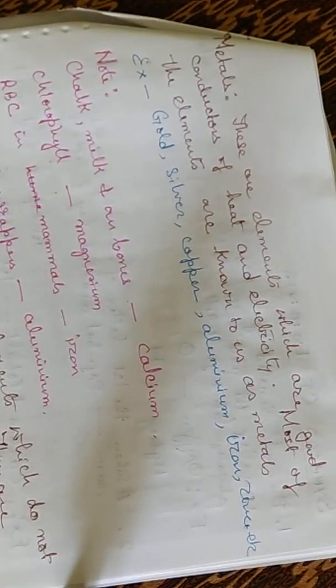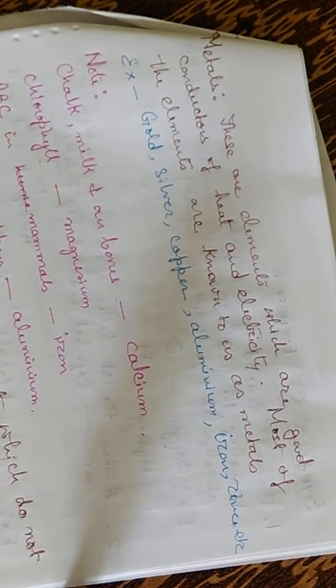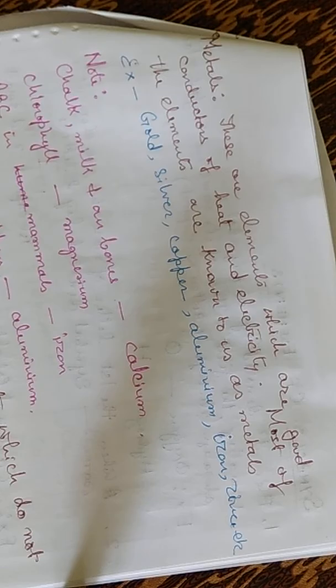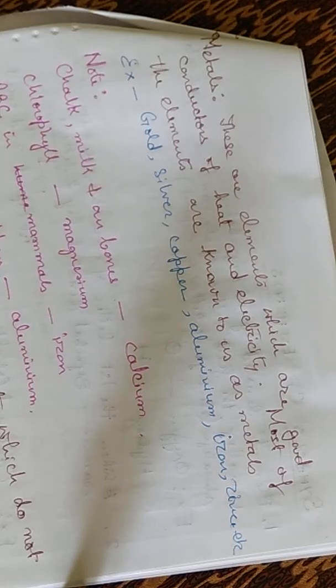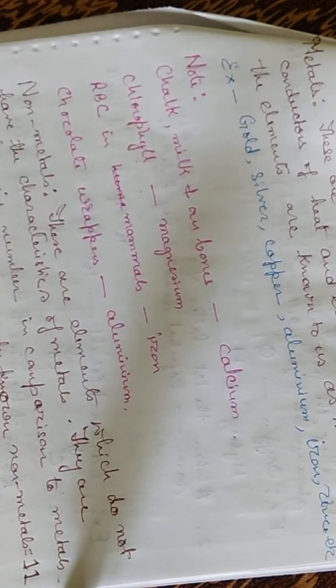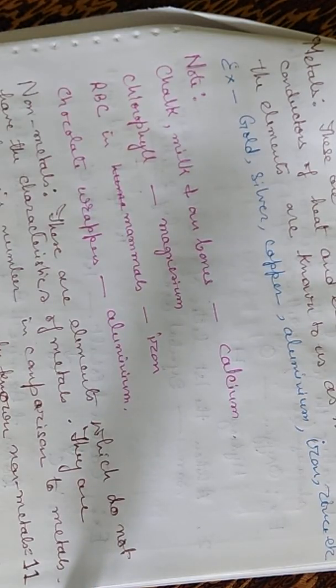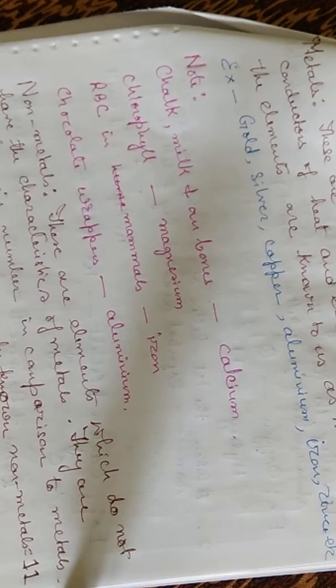Metals are elements which are good conductors of heat and electricity. Most of the known elements are metals. Examples include gold, silver, copper, aluminium, iron and zinc. Note: chalk, milk and bones contain calcium, which is a metal. Chlorophyll contains magnesium. Red blood cells in mammals contain iron. Chocolate wrappers — the silver or golden colored inner wrappers — are made of aluminium.